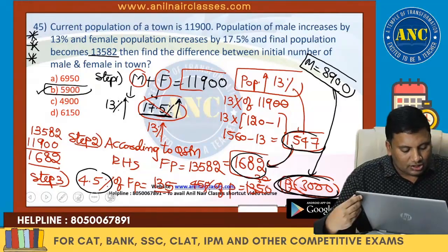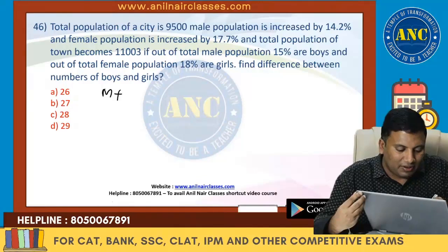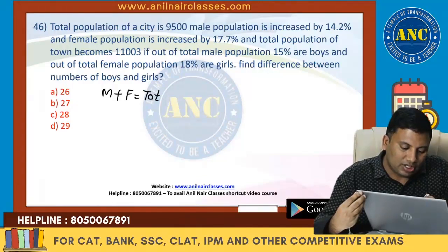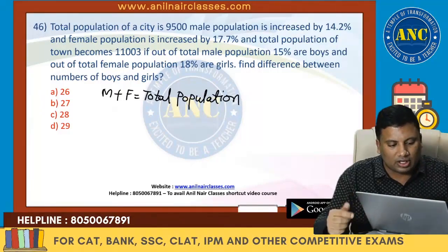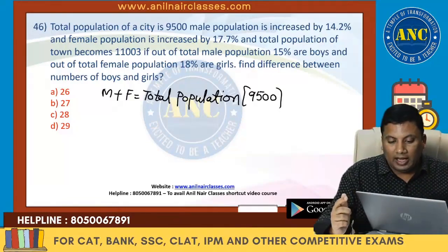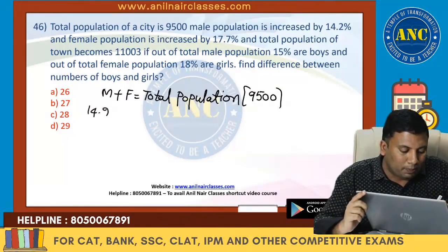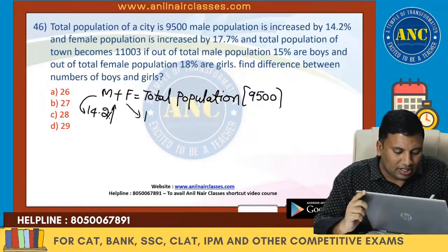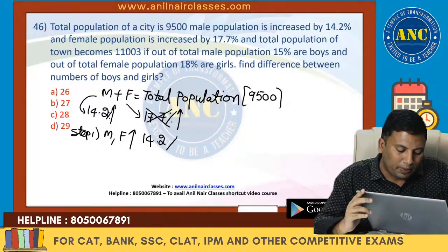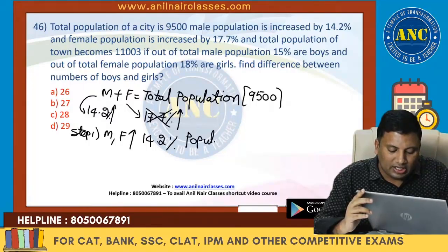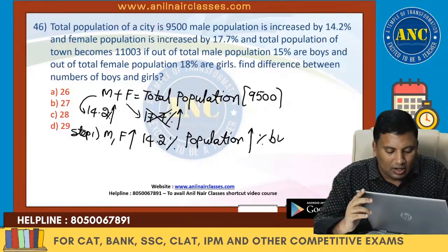Extremely important question, sir. Very, very important from the exam point of view. Let us do one more question. The total population — male plus female — equals total population. What is given in the question: total population of a city is 9,500. Male population increased by 14.2%. Female population increased by 17.7%. Ignore the 17.7% — if male and female population both increase by 14.2%, population also increases by 14.2%.